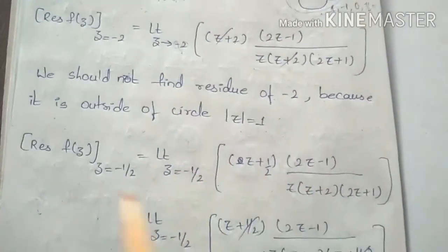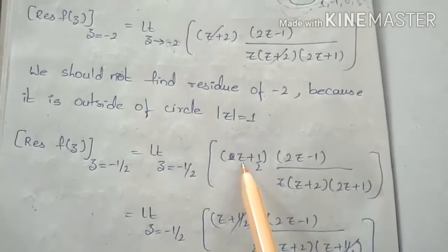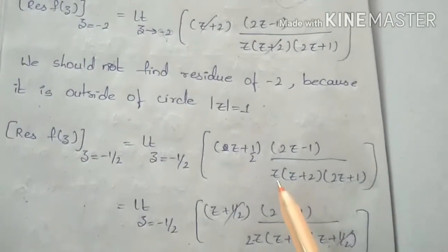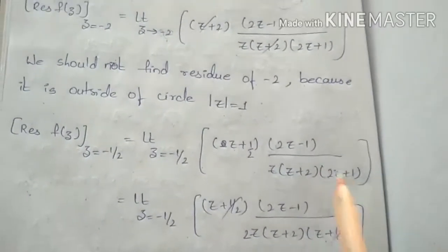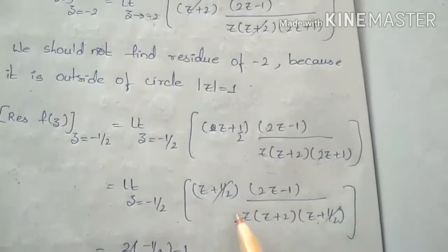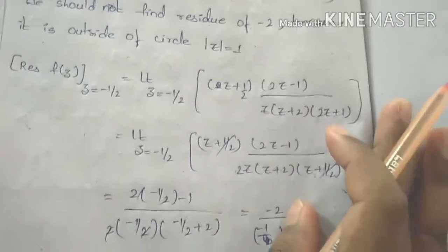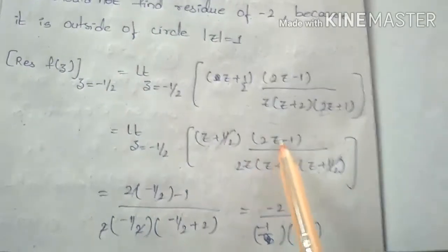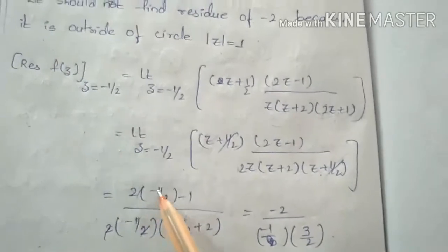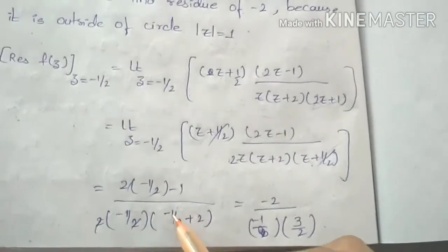Residue of f(z) at z equals minus 1 by 2: limit as z tends to minus 1 by 2 of (z minus (minus 1 by 2)) times (2z minus 1) divided by [z(z plus 2)(2z plus 1)]. The factor (z plus 1 by 2) cancels with (2z plus 1) divided by 2. Substituting z equals minus 1 by 2 gives 4 by 3.